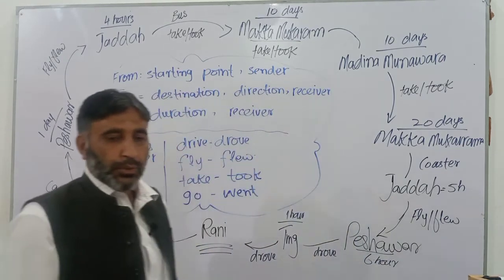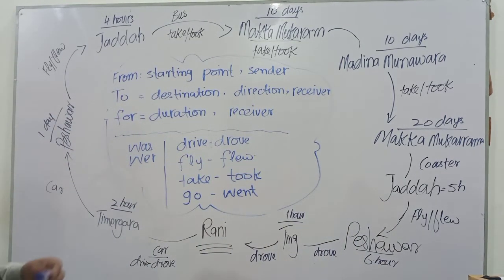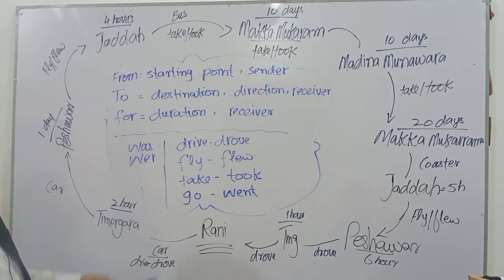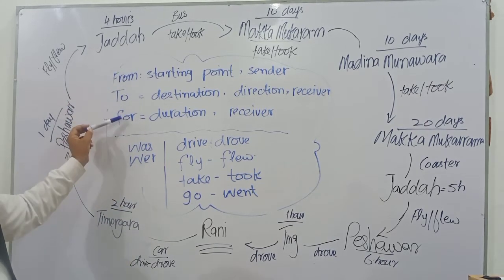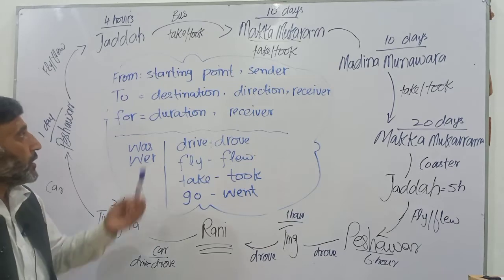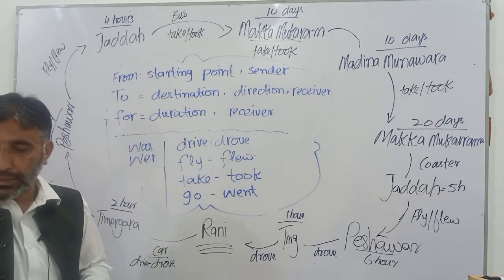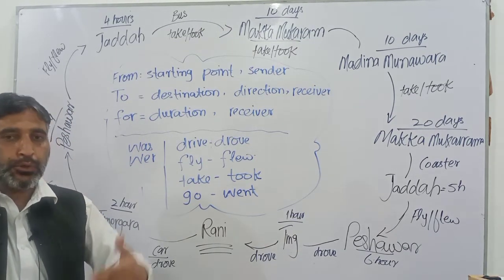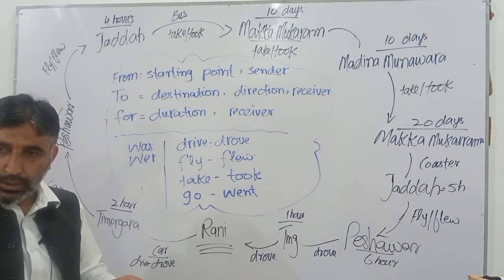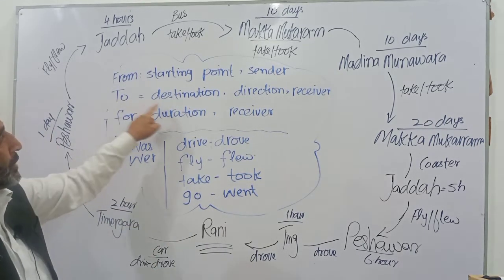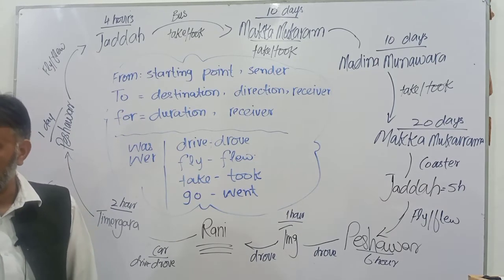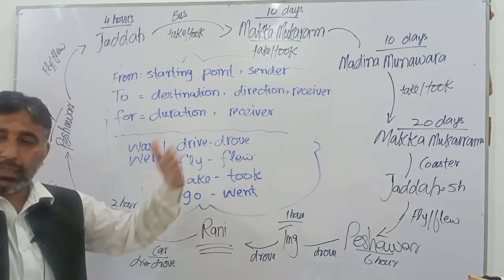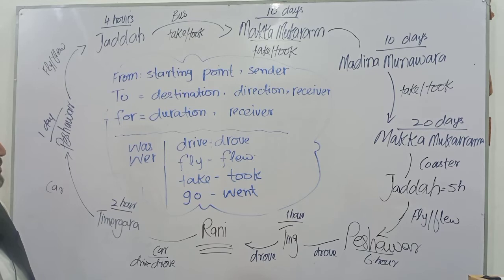In this activity we will talk about three prepositions: from, to, and for. We already discussed 'from' and 'for' in the previous activity. We use 'from' before the starting point and 'to' before the destination. For example: this bus goes from Temargara to Karachi.